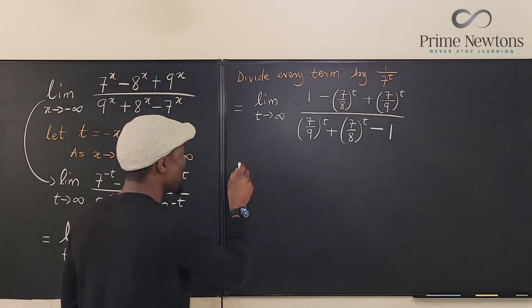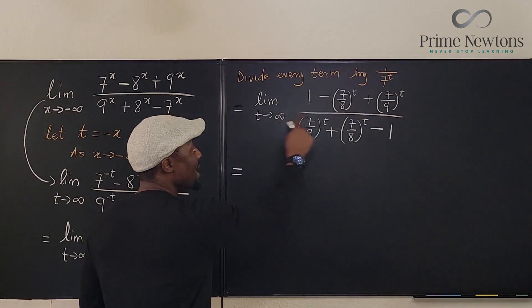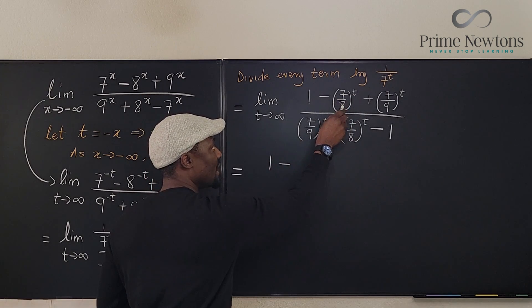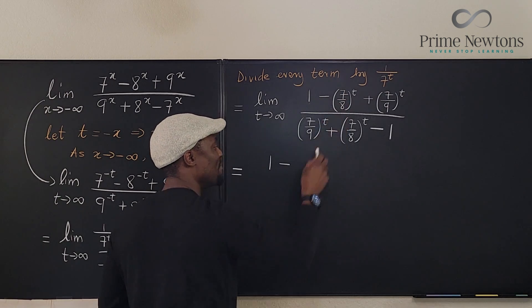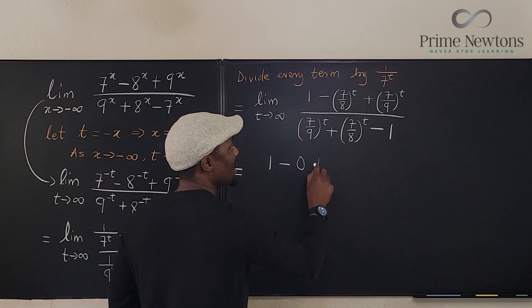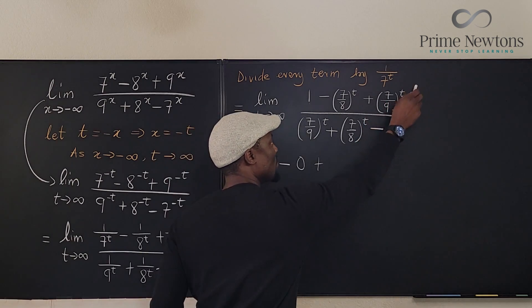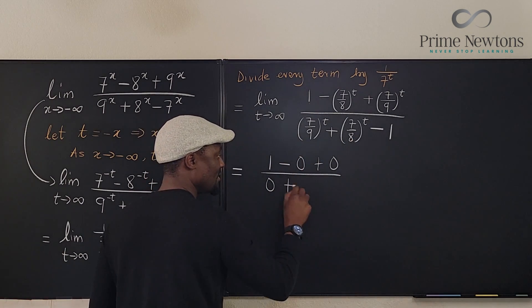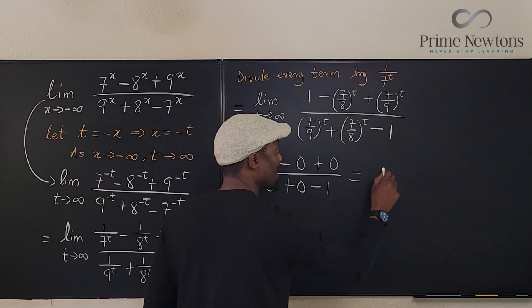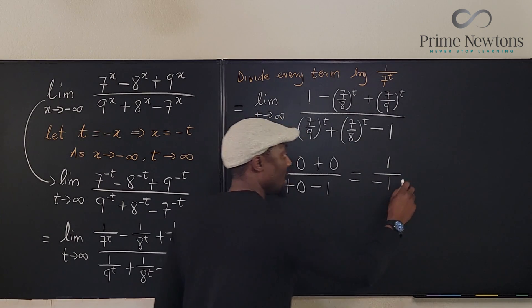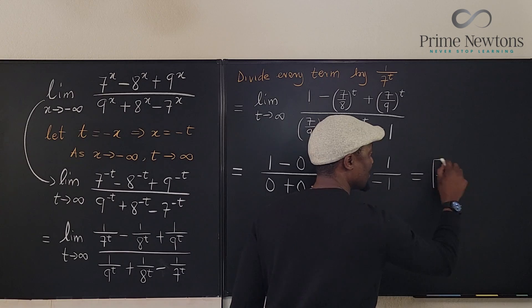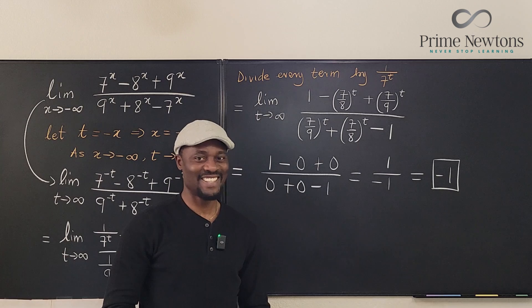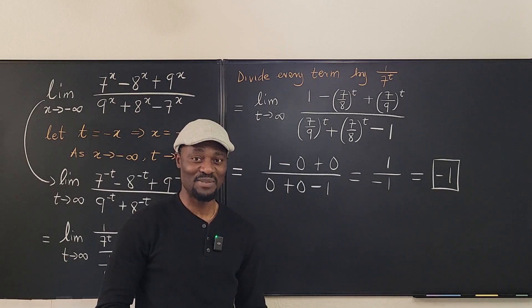Taking the limit now: the terms (7/8)^t and (7/9)^t all go to zero. So the numerator becomes 1 minus 0 plus 0 = 1, and the denominator becomes 0 minus 0 plus 1 = 1... wait — the denominator's last term is just 1, and the sign on the numerator's last constant gives us 1 on top and the result in the denominator yields -1 overall. The answer is negative 1. Easy — never stop learning; those who stop learning stop living.